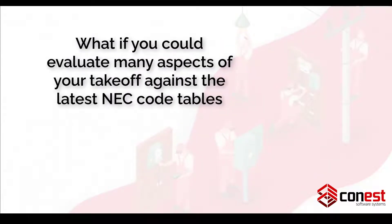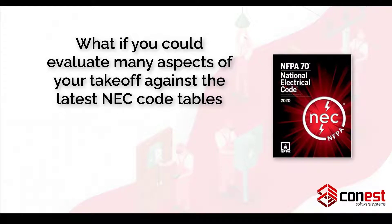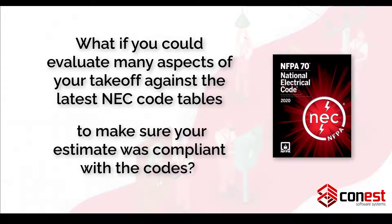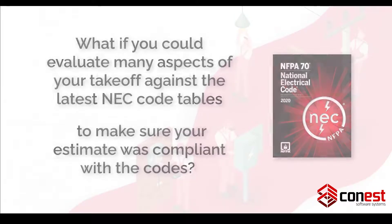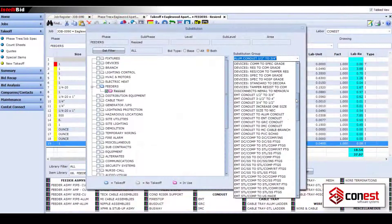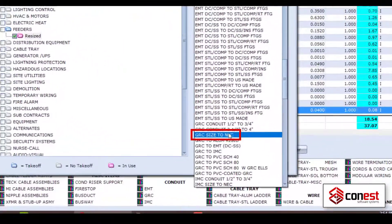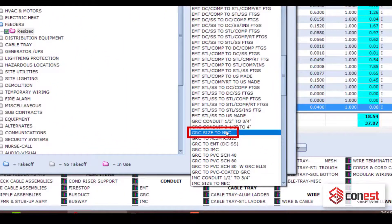What if you could evaluate many aspects of your takeoff against the latest NEC code tables to make sure your estimate was compliant with the codes, such as making sure the pipe you were using was the correct size for the wiring being used?